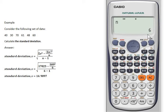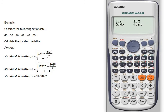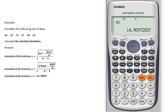Finally, to find the standard deviation value, press Shift, number 1, number 4, and choose number 4 for the standard deviation for sample. So the value for the standard deviation is 14.9097. And there we go.